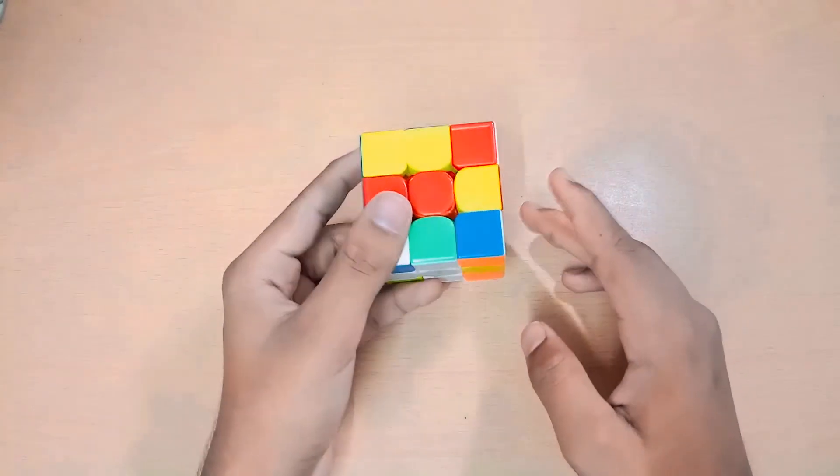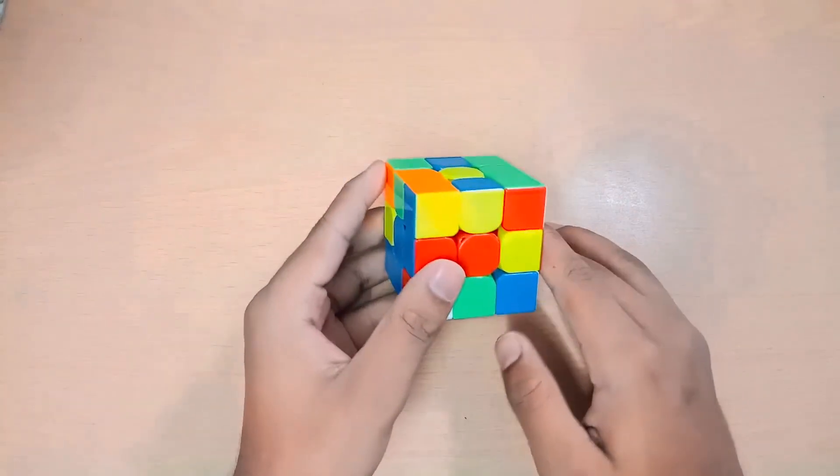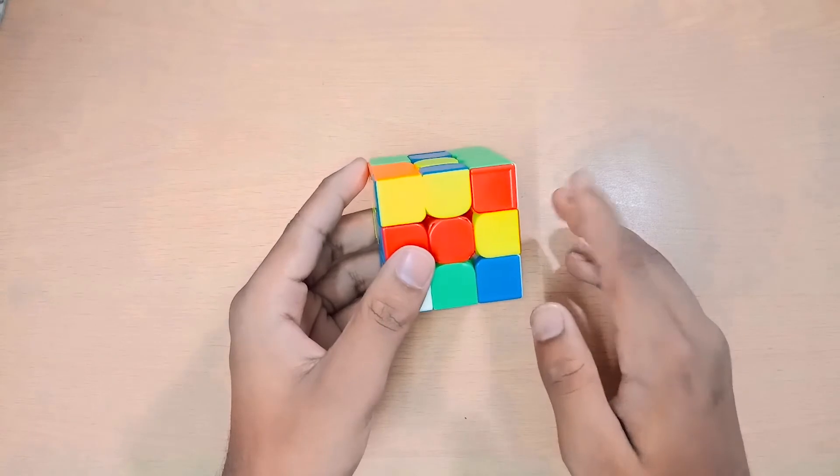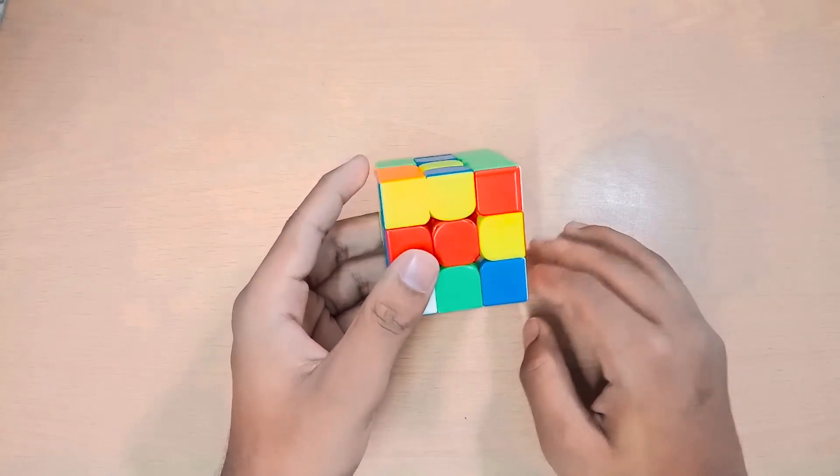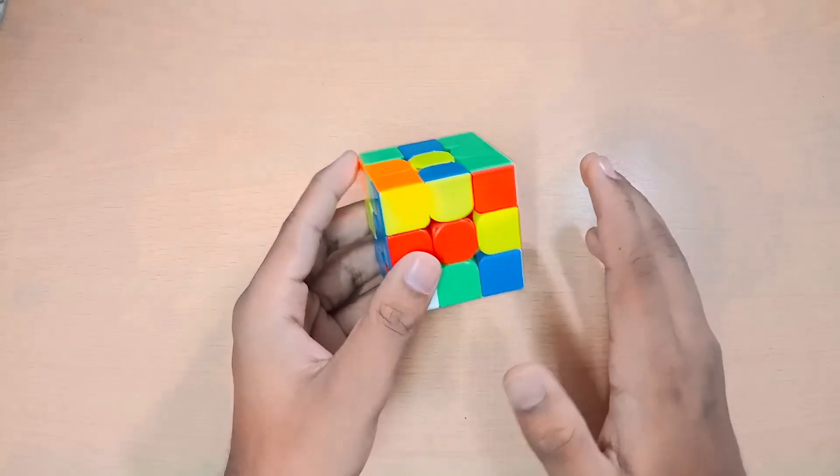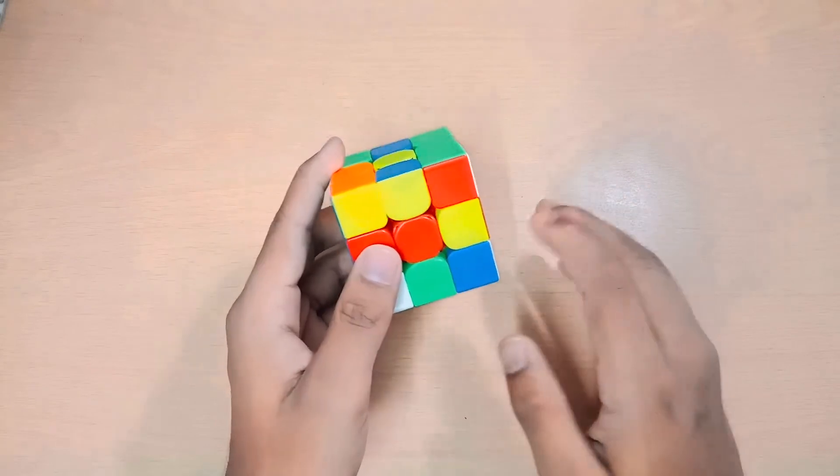Number two, don't always rush to solve your cross. As I said in my previous tip, it's okay if you don't always plan your first pair in inspection, but that does not mean it's gonna work out always the same. Chances are that your transition path from cross to F2L might go horrible in some situations.